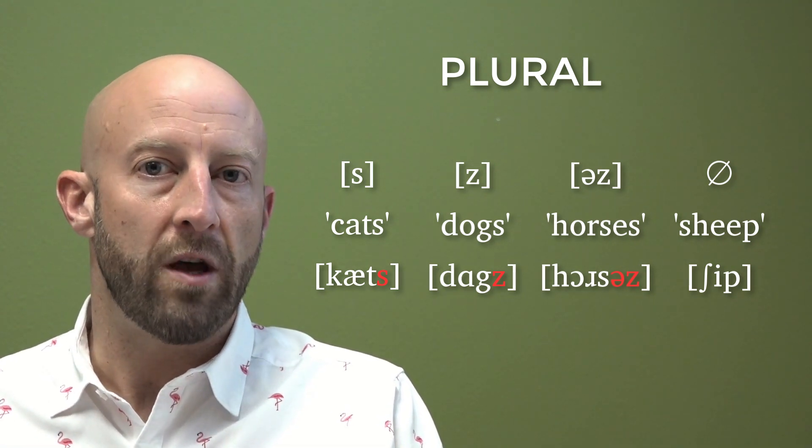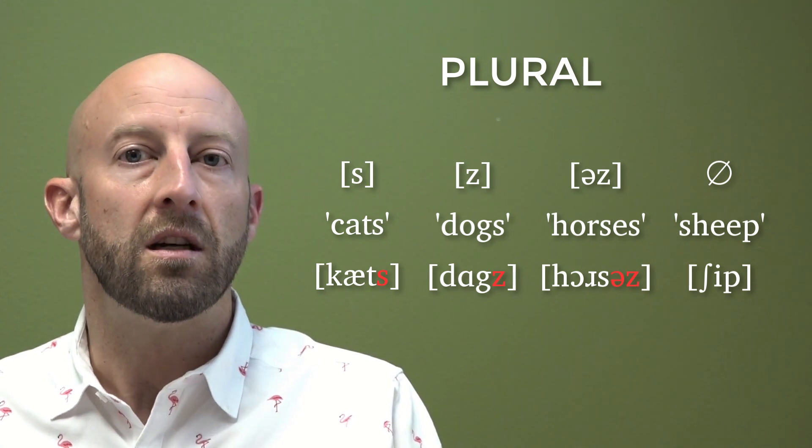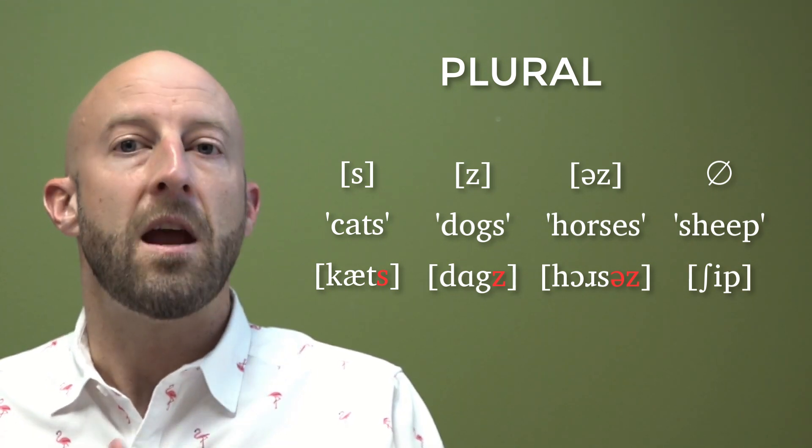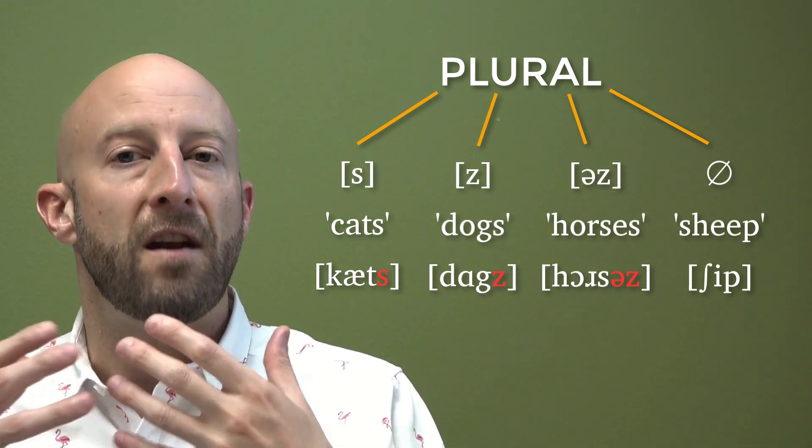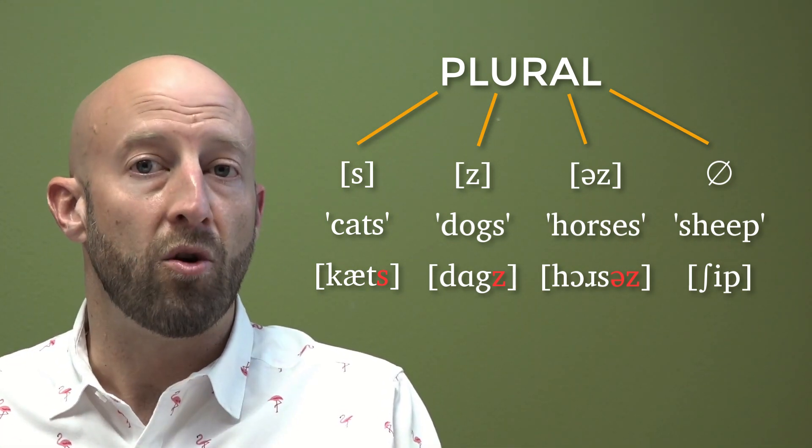So all four of those, whether it's /s/, /z/, /əz/, or zero, they are all ways to indicate the plural morpheme. They are all phonetic realizations of the plural morpheme.